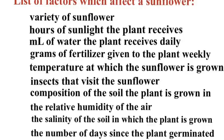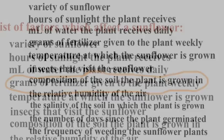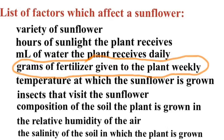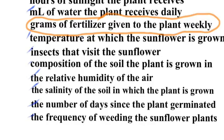Now we've got to test it. If you remember, I had the list of factors — we made our two lists: things about the sunflower and things that affect the sunflower. From that list I picked my independent variable, which was grams of fertilizer given to the plant weekly. I could have chosen any of these to be my independent variable, but this is the one I decided to look at — fertilizer. So I'm going to add this all-purpose fertilizer to it and see if it changes how high it grows.